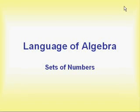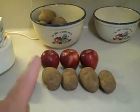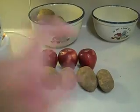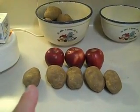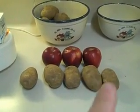Today we're going to talk about sets of numbers — different kinds of numbers. First, we'll talk about the natural numbers. These are numbers that you use to count — the counting numbers. If we want to count, for instance, apples: one, two, three. Or we want to count potatoes: one, two, three, four, five.